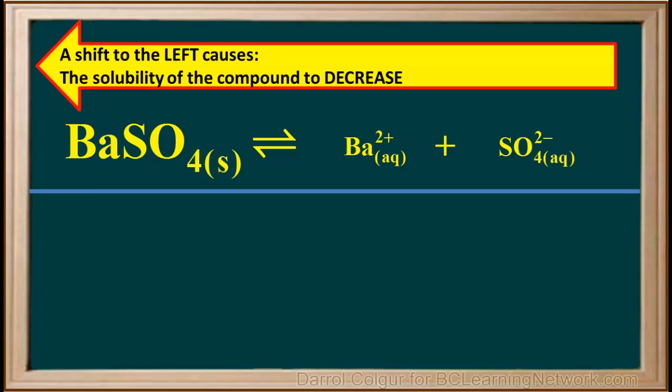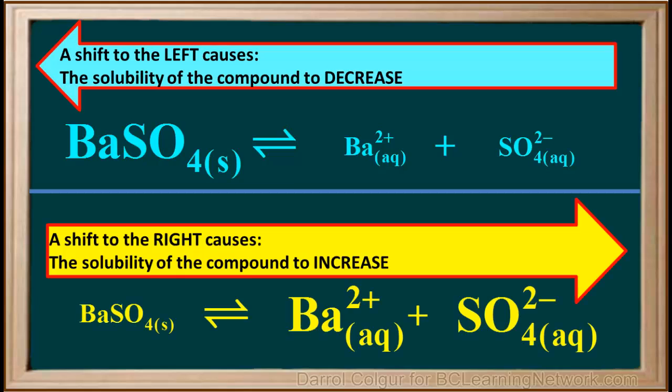To summarize: when the solubility equilibrium shifts to the left, the solubility decreases and more solid forms. And when the solubility equilibrium shifts to the right, the solubility increases and more of the solid dissolves. It's very important to remember these.